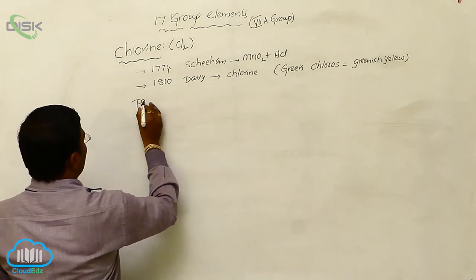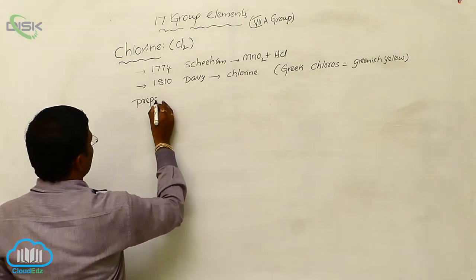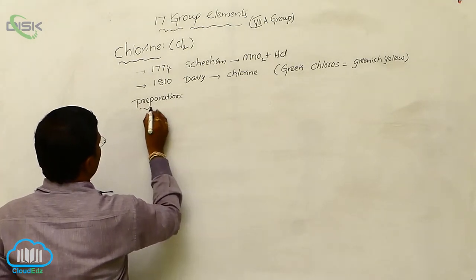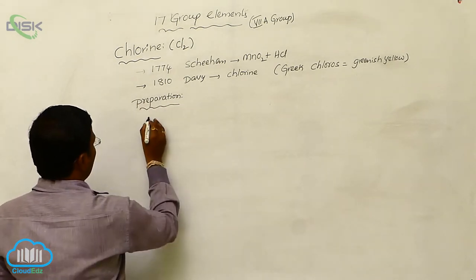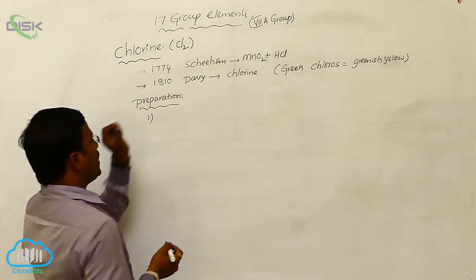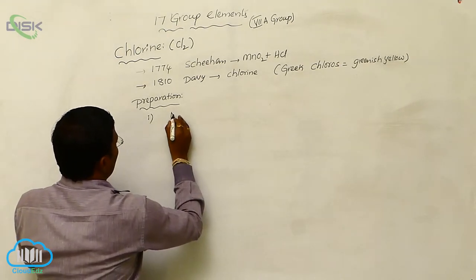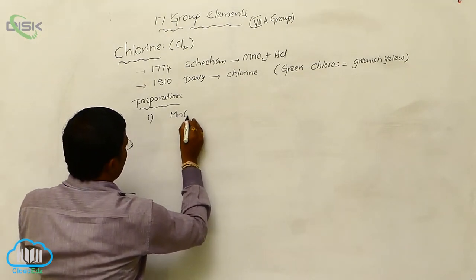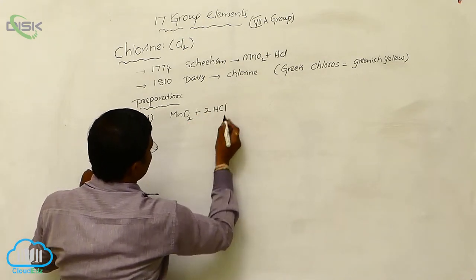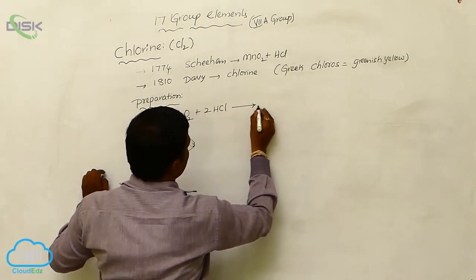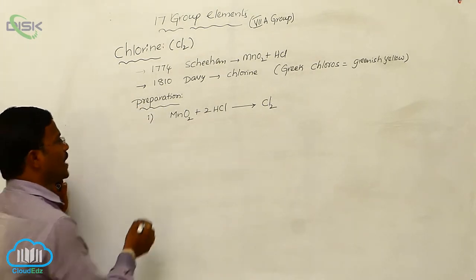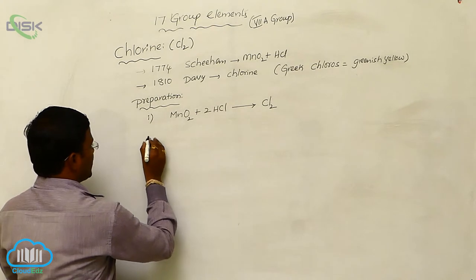Let us have preparation of chlorine. First one, as we mentioned just now, as per Scheele's method, when manganese dioxide is heated with concentrated sulfuric acid, it produces Cl2. Release of chlorine gas takes place.